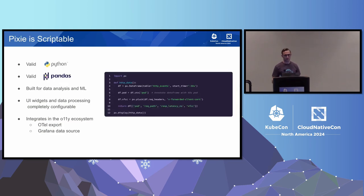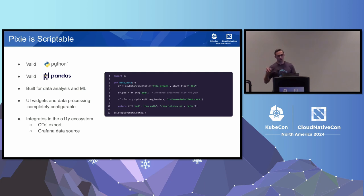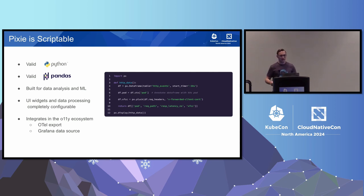A little bit more on the scriptable components of Pixie: it is Python and Pandas, built for data analysis and machine learning in mind, and all of Pixie's UI widgets and data processing are powered by this language. On the right-hand side here you can see a snippet of what PxL looks like. Line four is requesting the last 30 seconds of HTTP spans. On line six, PxL is actually able to annotate each data frame with the Kubernetes pod that frame corresponds to. Because we have all of the payload and metadata, we can pull out things like the X-Forwarded-Client-Cert header and do the processing we need. Pixie also supports OpenTelemetry export, and that is how we're going to be integrating this into the rest of our pipeline.